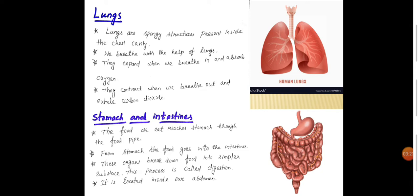Stomach and intestine: The food we eat reaches the stomach through the food pipe. From the stomach, the food goes into the intestines. The organs break down food into simpler substances and the process of breaking down into simpler substance is called digestion. It is located inside of our abdomen.